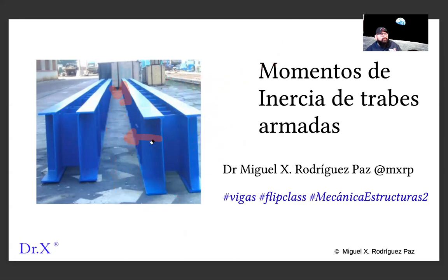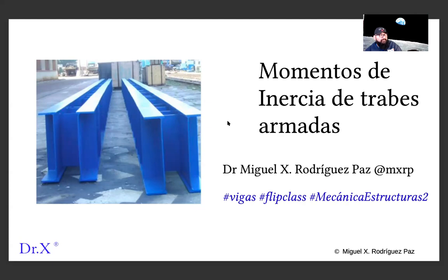All cross sections have one axis weaker than the other — unless they have double symmetry. If the section has double symmetry, for instance a square, then both axes have the same moment of inertia and there is no weak or strong axis. But for non-symmetric sections, we need to calculate both. I recommend the app on Android called 'Steel Sections' for checking these values.